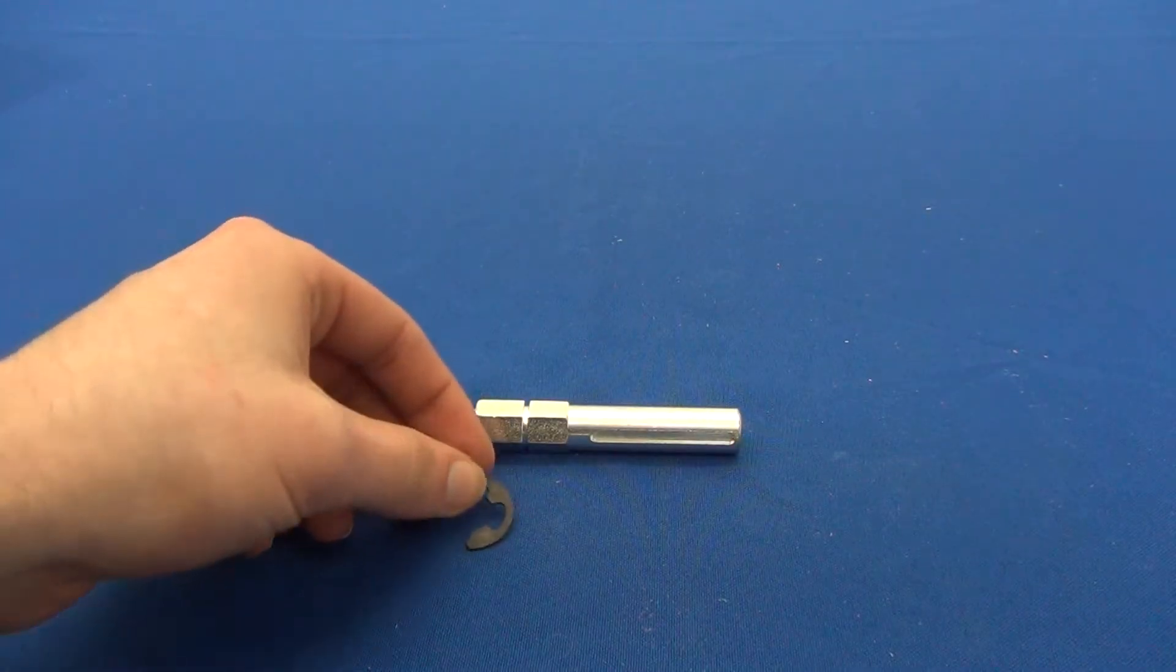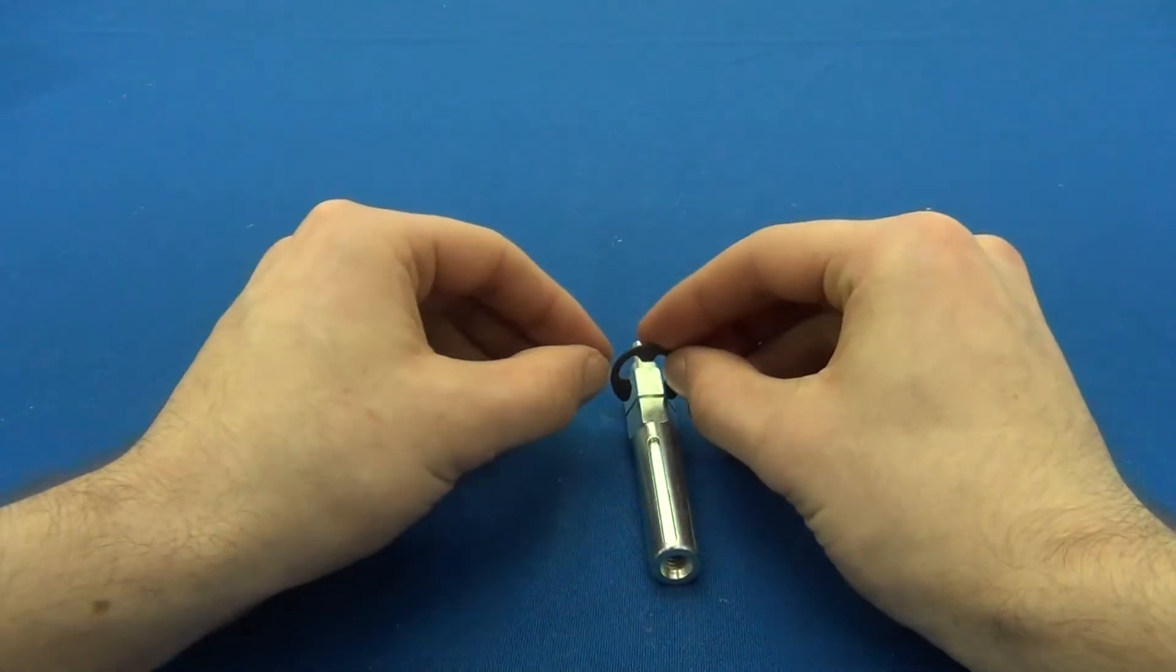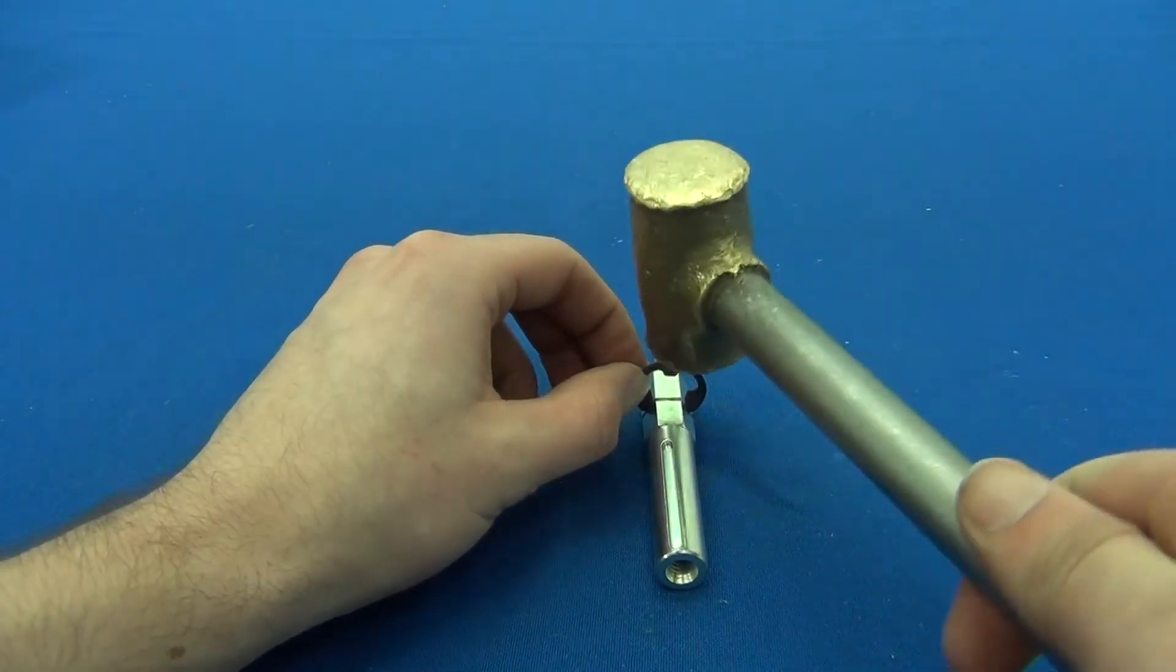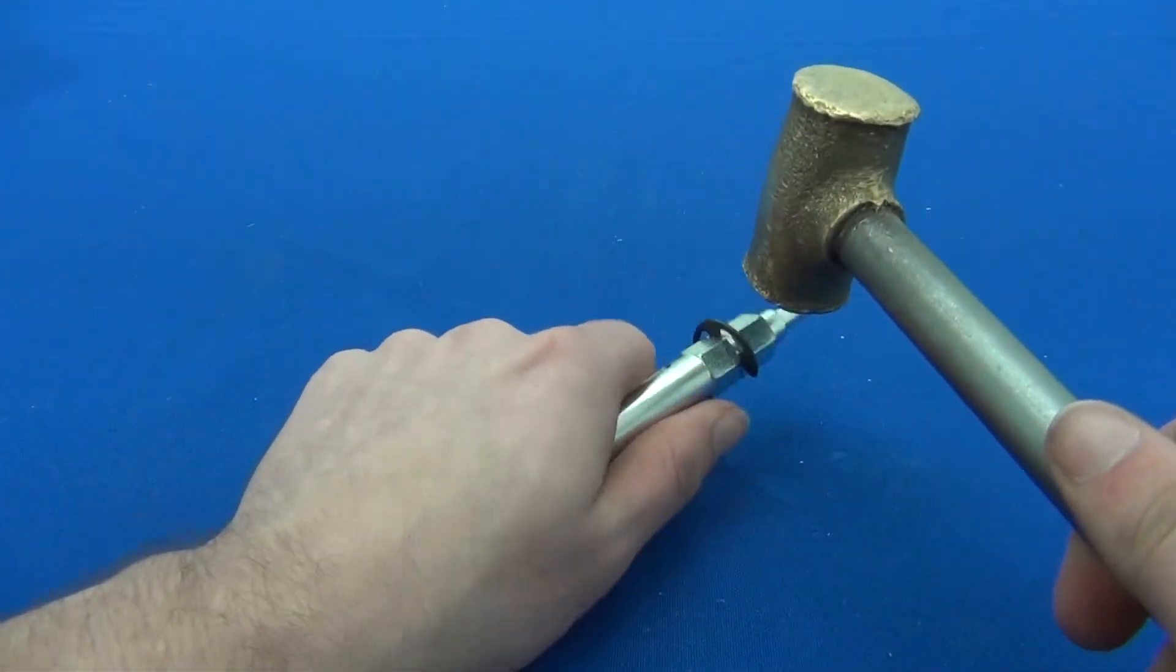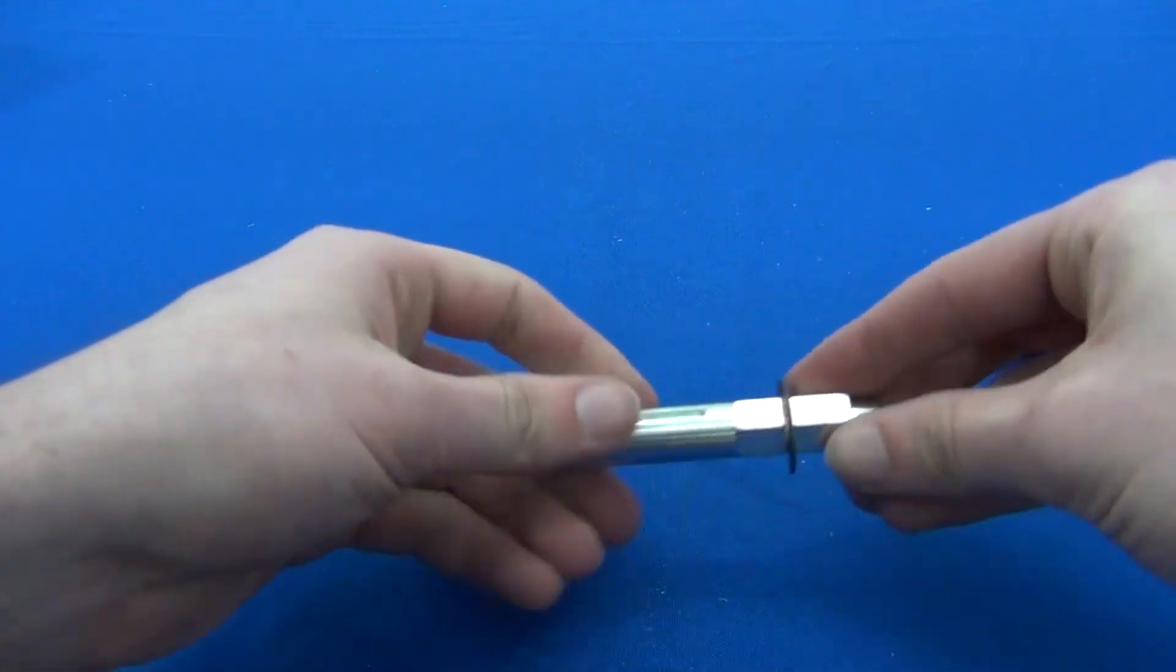This next part is exciting. We're going to attach the clip ring to the output shaft. That's going to help keep a gear in place. If you have a wrench, you might be able to push on the clip. We're going to carefully tap it on with our brass hammer. Try not to smash your fingers. Now that that's done, let's set it aside.